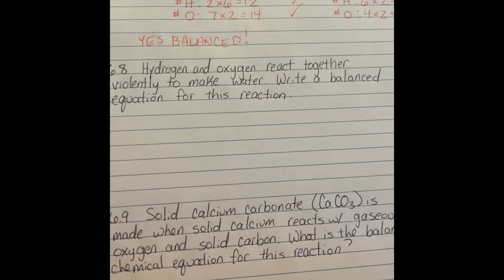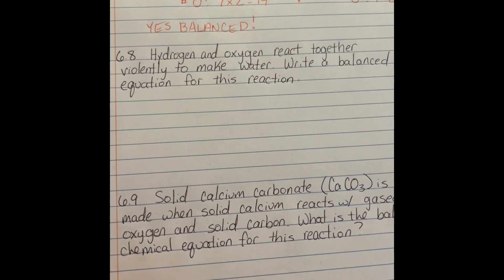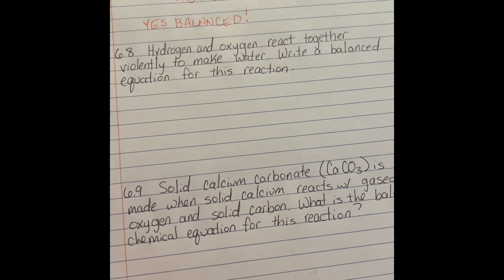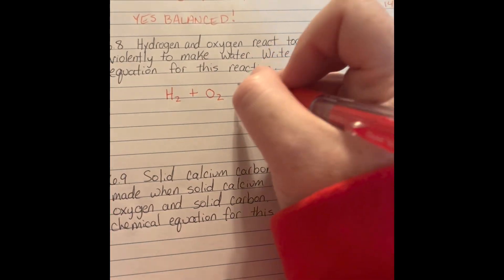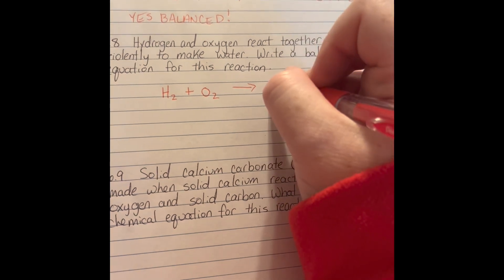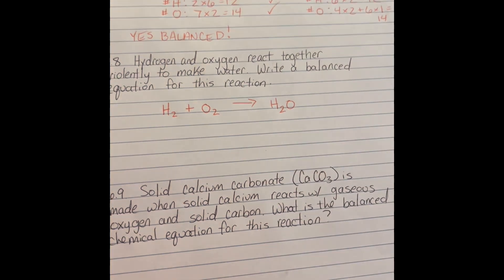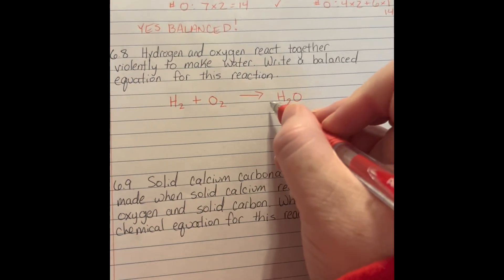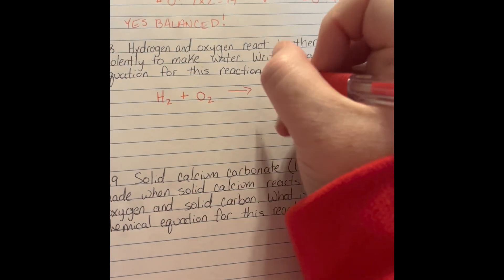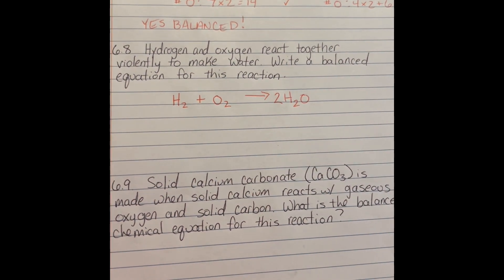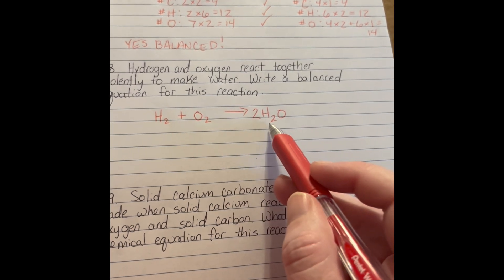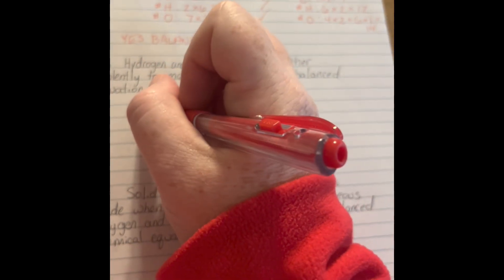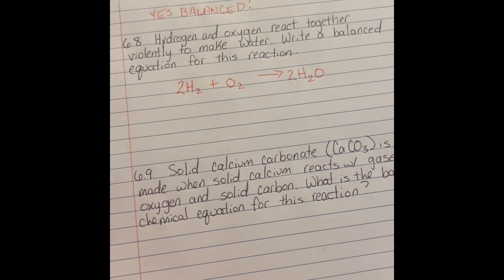For problem 6.8, it says hydrogen and oxygen react together violently to make water — write a balanced equation for this reaction. You need to know that hydrogen and oxygen are both homonuclear diatomics. So I have H2 reacting with O2 giving H2O. I put a 2 in front of H2O because I have two oxygens on the left and only one on the right — that balances my oxygens. But it changes my hydrogen to four: two water molecules with two hydrogens each. So I put a 2 in front of H2, giving my balanced equation: 2H2 + O2 → 2H2O.